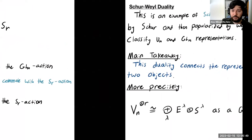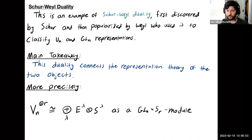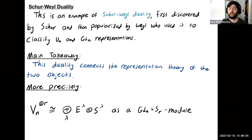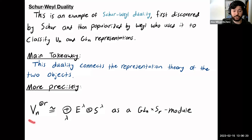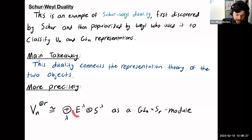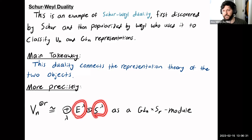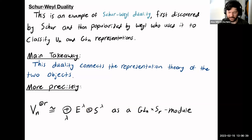This is an example of the phenomenon of Schur-Weyl duality. It was first discovered by Schur and then popularized by Weyl, who used it to classify representations of the unitary group and general linear group. The main thing to take away is that it connects the representation theory of the two objects. More precisely, this gives a decomposition of the R-th tensor power as a GLn cross SR module into a multiplicity-free direct sum, pairing up GLn modules with SR modules.